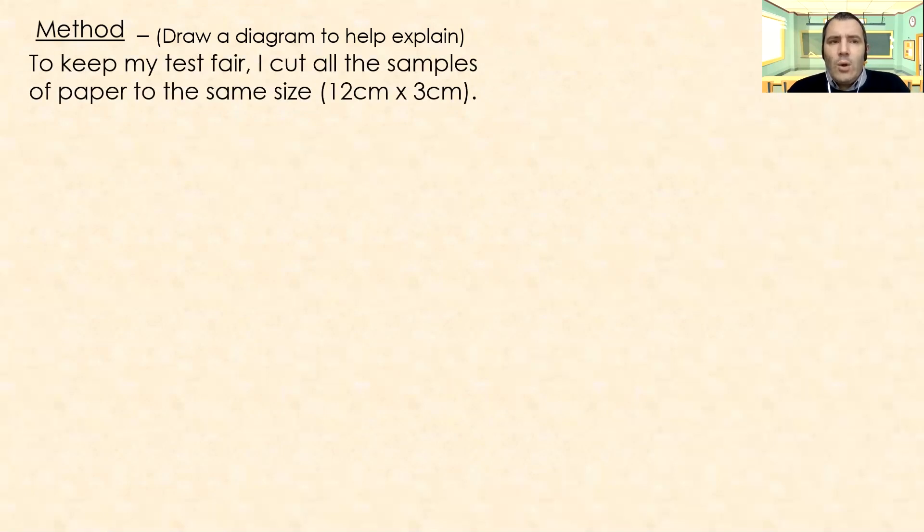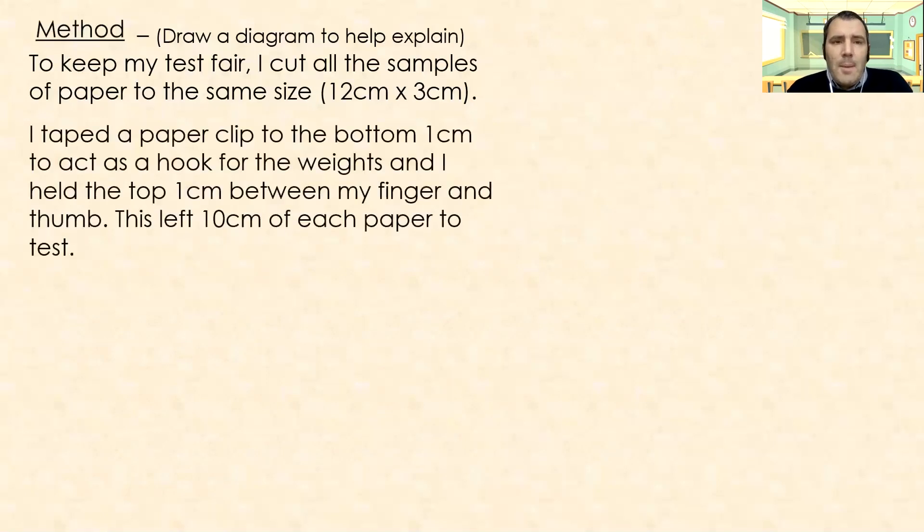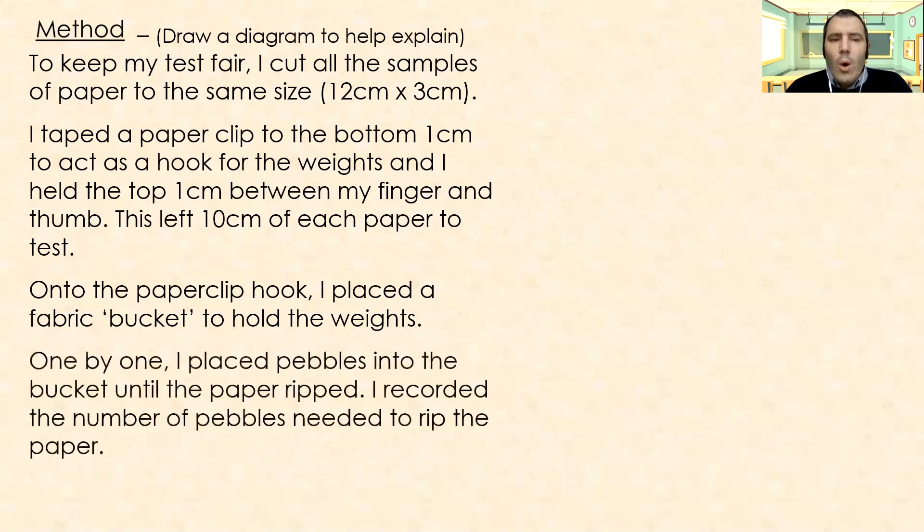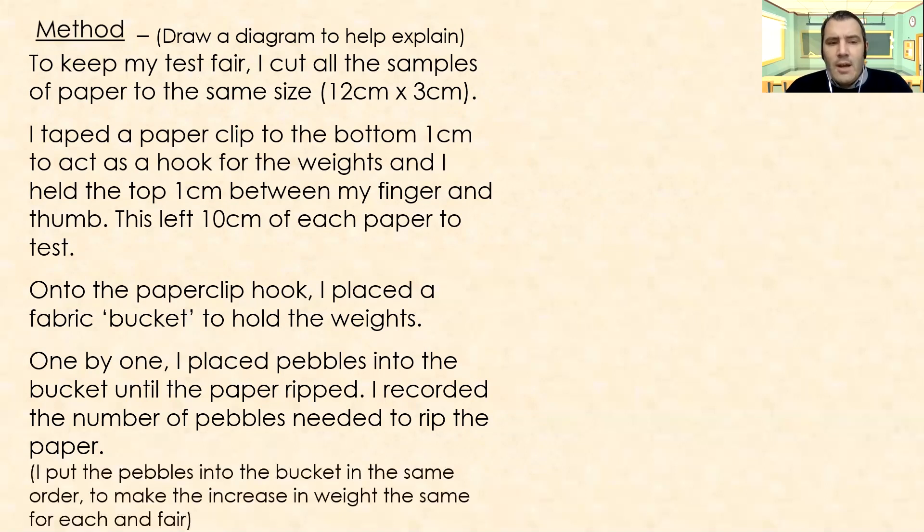So to keep my test fair, I cut all the samples of paper to the same size. I cut them into strips 12 centimetres long by three centimetres wide. In our last lesson, I did say, make sure you keep the pieces of paper the same size so that it's one less variable. So we keep it as fair as possible for the test. I taped a paper clip to the bottom centimetre to act as a hook for the weights, and I held the top centimetre between my finger and my thumb. This left 10 centimetres of each paper to test. Onto the paper clip hook, I placed a fabric bucket to hold my weights. One by one, I placed pebbles into the bucket until the paper ripped. I recorded the number of pebbles needed to rip the paper. I put pebbles into the bucket in the same order to make the increase in weight the same for each test so that it keeps it as a fair test.